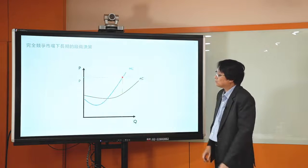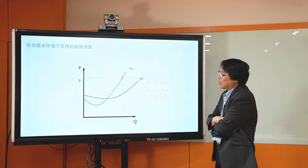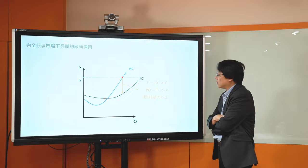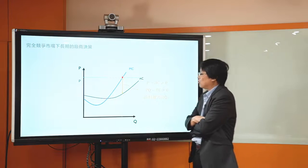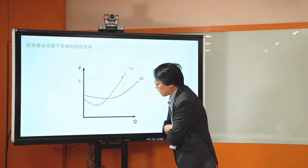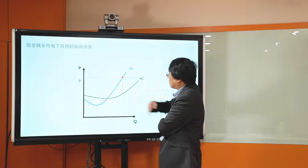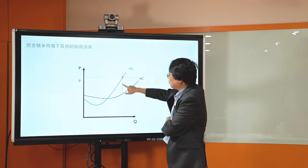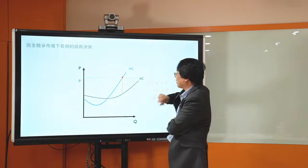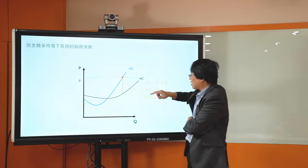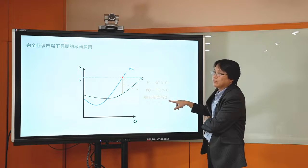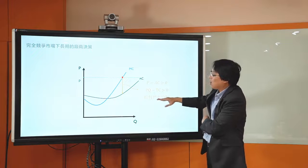如果价格比AC低，表示利润是负的，这个事情就不用做了；如果价格比AC高，表示利润是正的，当然还是可以继续做。条件跟短期的时候非常类似：P等于MC决定最适产量，P等于AVC（也就是AC）决定是否停业。在市况非常好的时候，价格比平均成本线来的高，表示此时利润大于零。